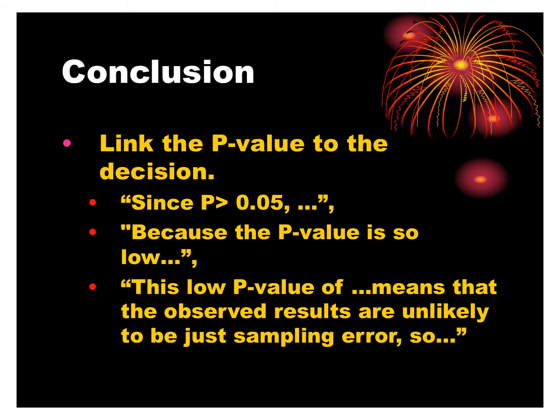A low p-value of 0.01 means the observed results are unlikely to be just sampling error. It was too unlikely to get seven reds in a row by random chance to still believe the deck was fair.